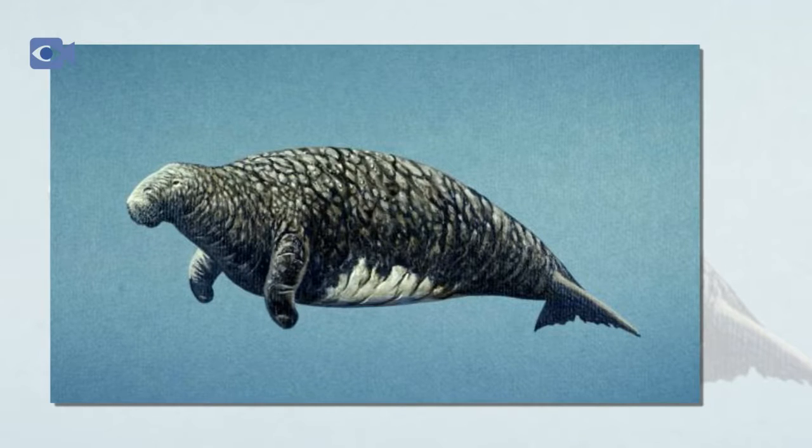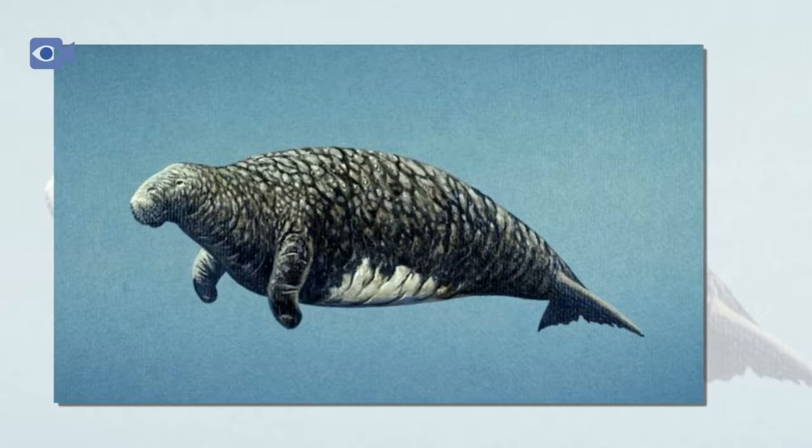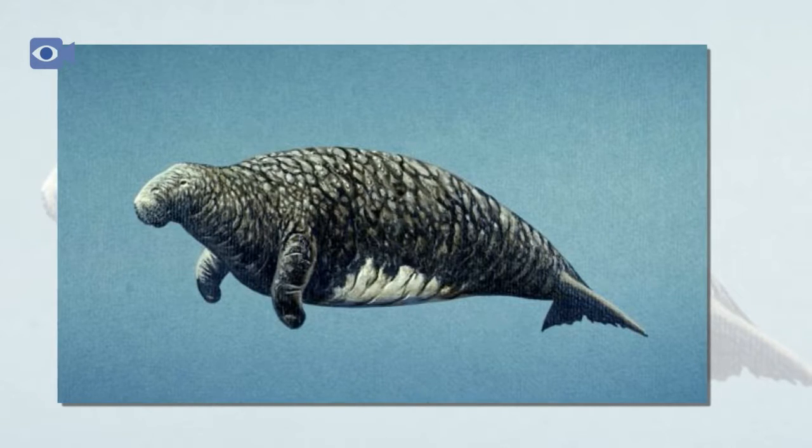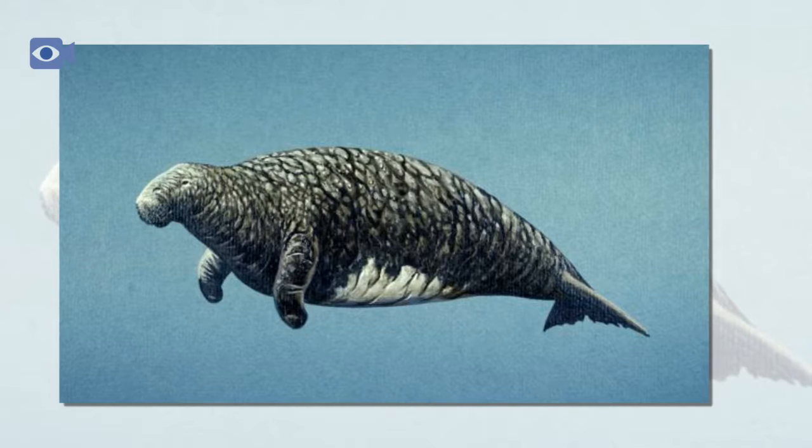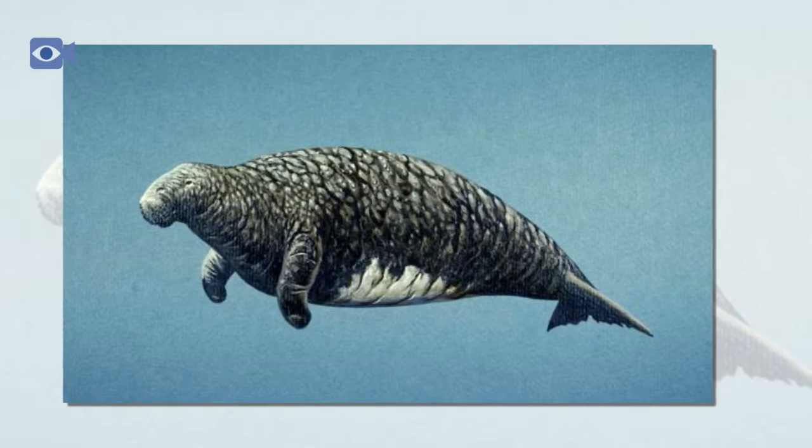The animal never comes out on shore but always lives in the water. Its skin is black and thick, like the bark of an old oak. Its head in proportion to the body is small. It has no teeth, but only two flat white bones, one above, the other below.